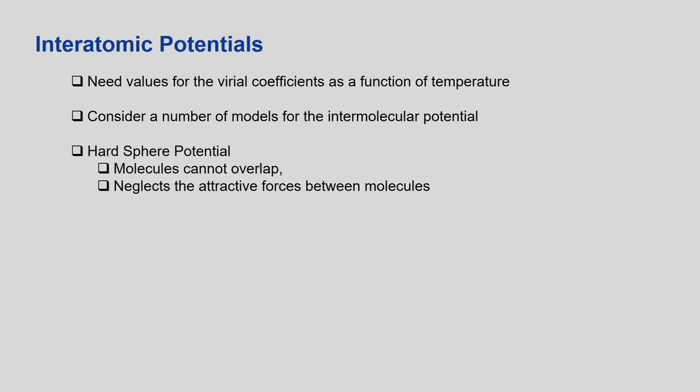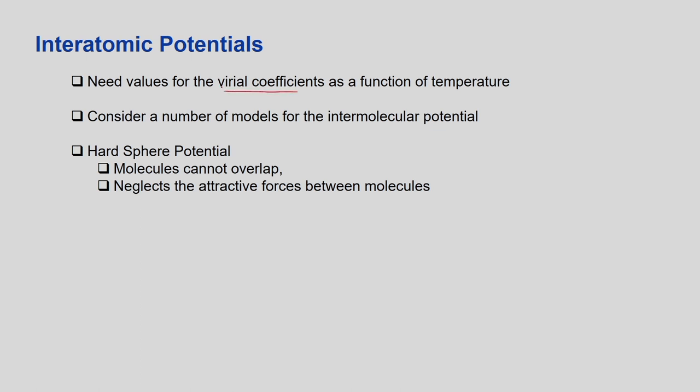In the previous lecture we obtained expressions for the equation of state and the virial equation of state, then combined them in the form of a series expansion of the virial coefficients b1, b2, b3, b4, and so on. What we need now are the values of b1, b2, b3, and these values should also be a function of temperature because attractive or repulsive forces are also a function of temperature. We will consider a number of models to derive these potentials and from them find the virial coefficients.